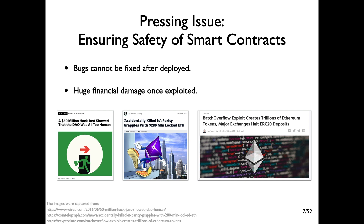Recently, ensuring safety of smart contracts is emerging as a pressing security issue. There are two major reasons for this situation. First, smart contracts are immutable — vulnerabilities in smart contracts can never be fixed once they are deployed on the blockchain. Second, and more importantly, since smart contracts typically manipulate very sensitive data, even a single flaw in smart contracts can cause huge financial damage.